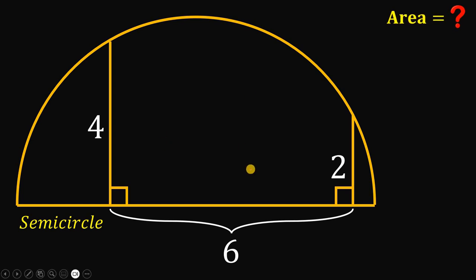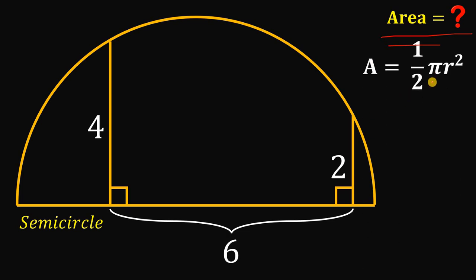Alright, given this figure, our goal is to find the area of this semicircle. How do we find the area of this semicircle? We have a formula: one half times pi r squared. Pi r squared is the area of the circle, and we multiply this by one half to get the area of the semicircle.